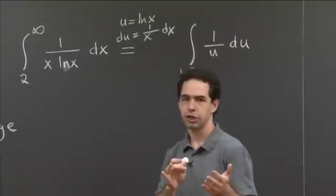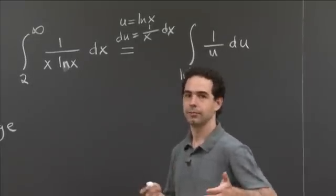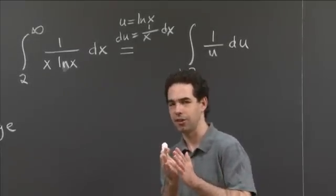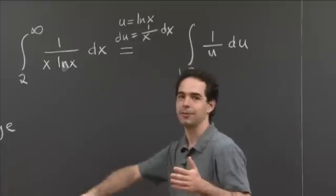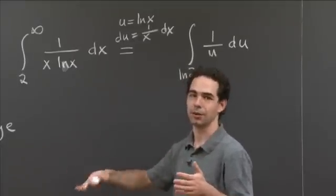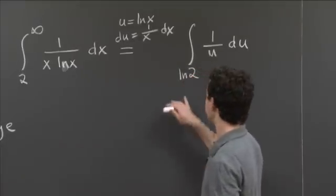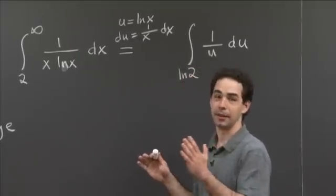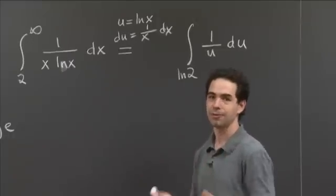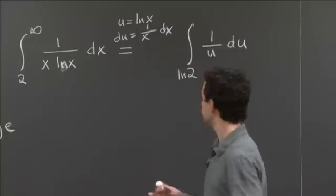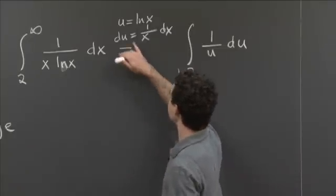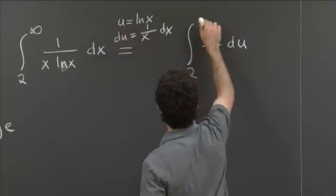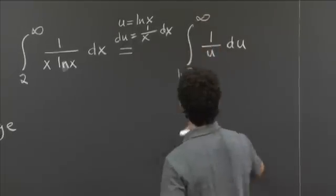Because if you change it a little bit, that's not going to change whether it converges or diverges, as long as you don't move it across a place where the function explodes. All the interesting stuff is whether the function is big as it goes to infinity. So if you move it a little around at the bottom, you'll change its numerical value, but you won't change whether it converges or diverges. But in any case, it's ln of 2. And then when x goes to infinity, ln of x goes to infinity, so the upper bound is also u equals infinity.